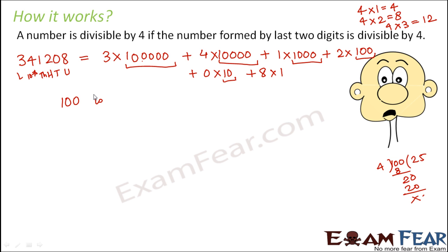Now since 100 is divisible by 4, that means any multiple of 100 would also be divisible by 4. Therefore, multiple of 100 is also divisible by 4. So that means if 100 is divisible by 4, then 100×10, that is 1000, is also divisible by 4.